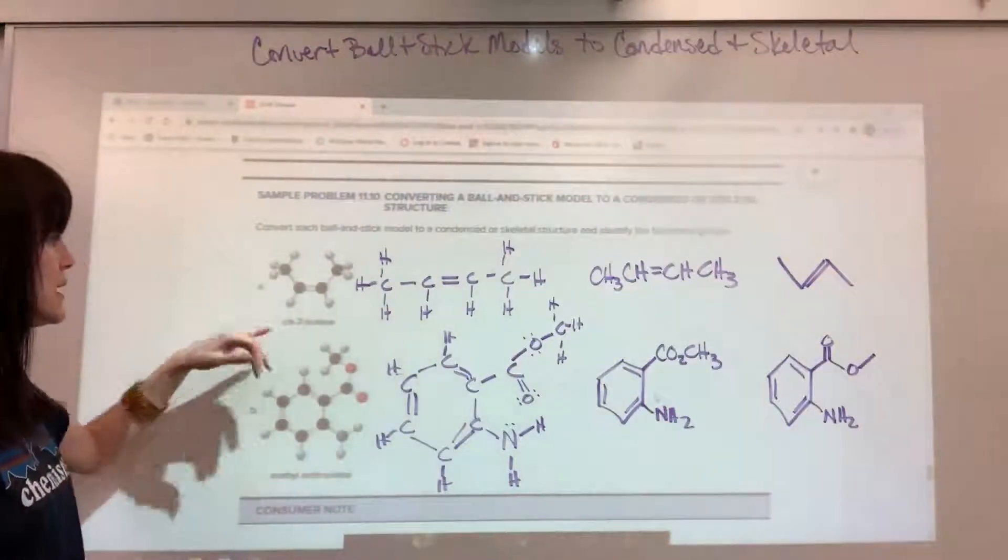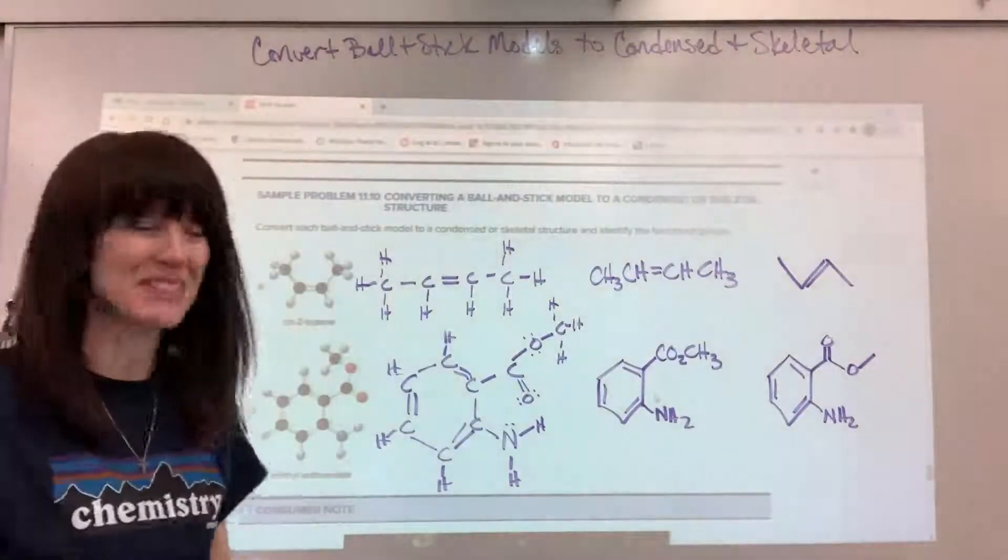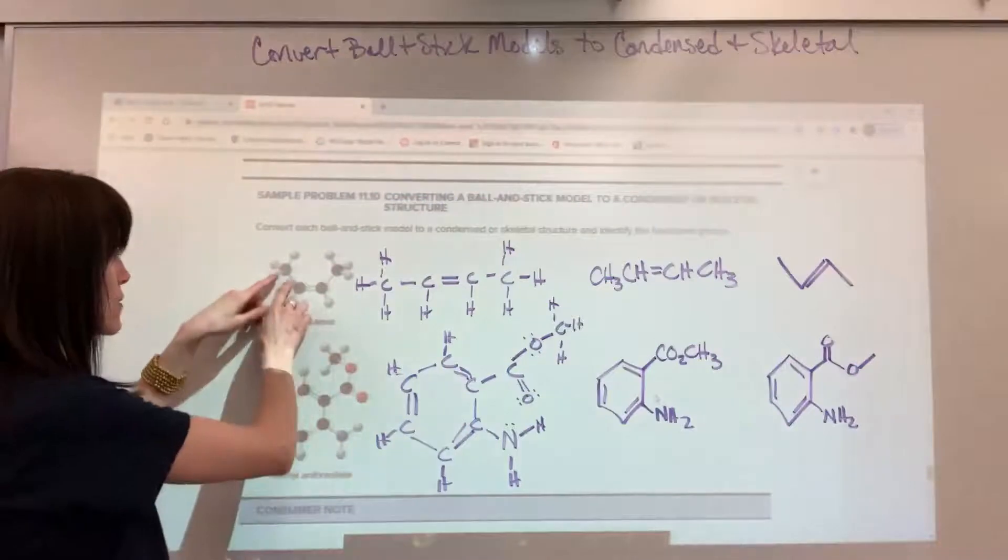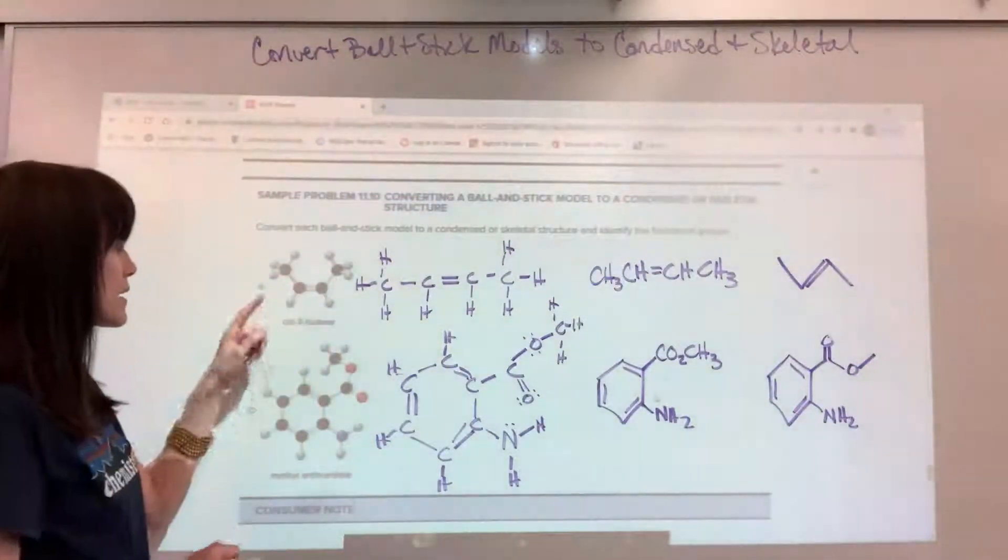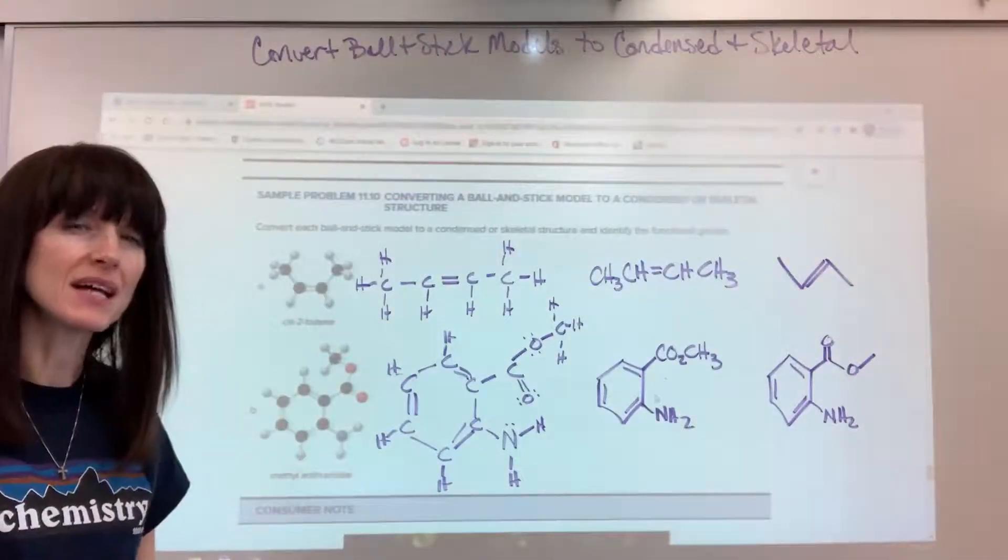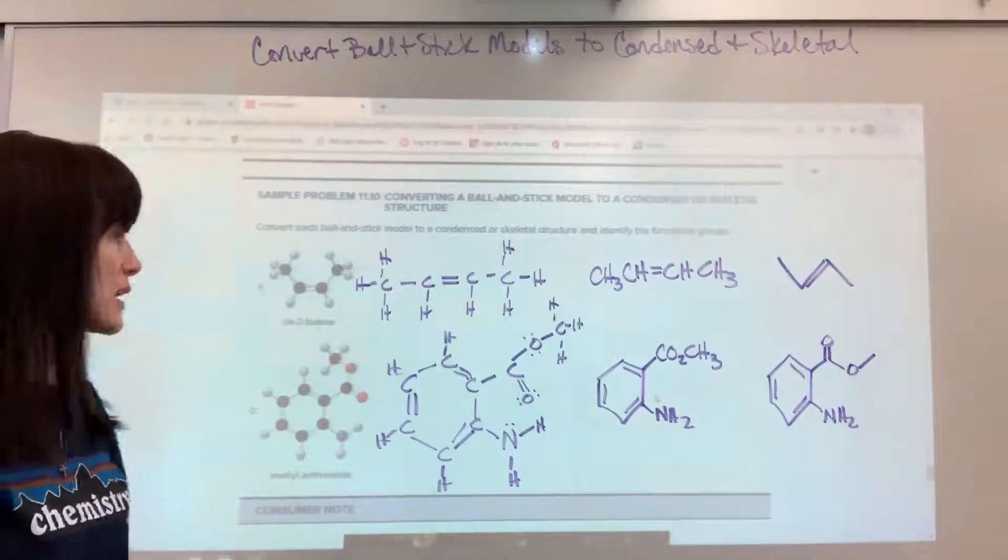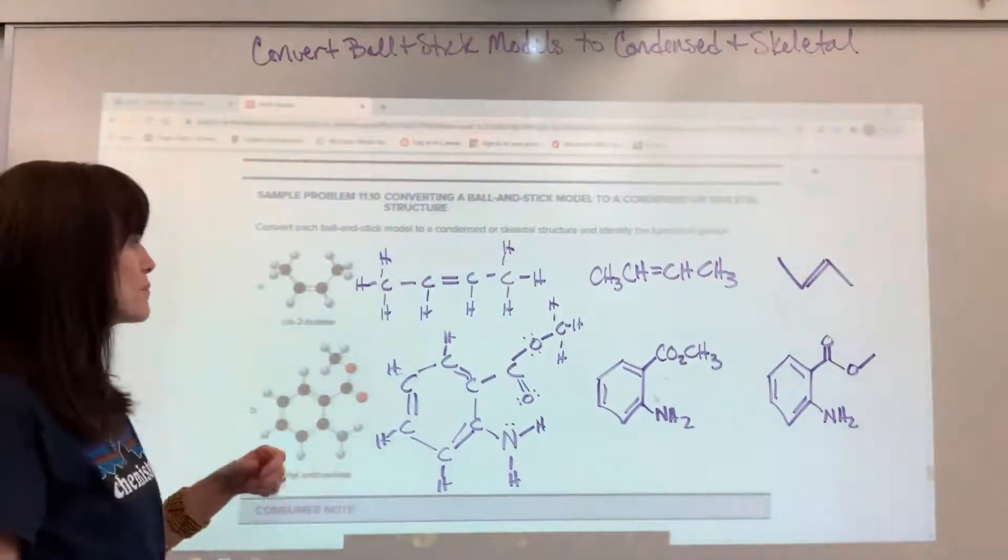So here we have our ball and stick model. Let's look first at the cis-2-butene. Writing everything out, the carbons are in black, the hydrogens are in white, and that's pretty standardized in organic chemistry when you look at ball and stick models.